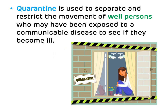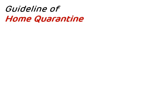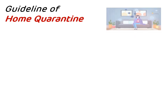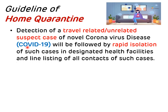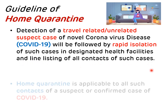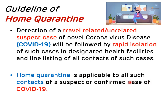There are two types of quarantine: the first type is home quarantine and the second is institutional quarantine. Home quarantine will be applicable to all contacts of a suspect or confirmed case of COVID-19, following rapid isolation of detected cases in designated health facilities and line listing of all contacts of such cases.